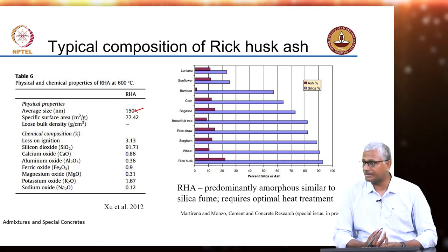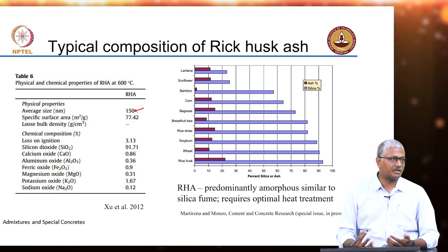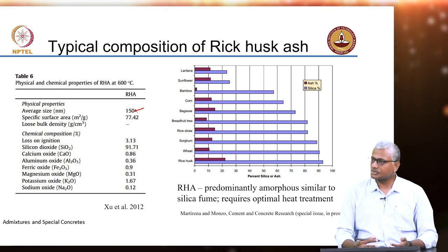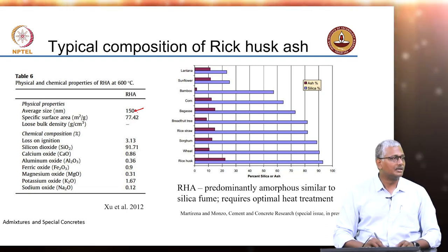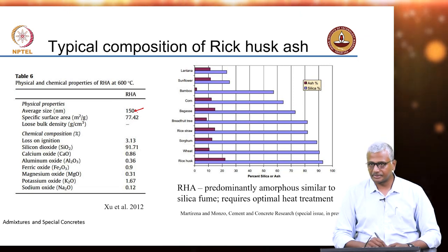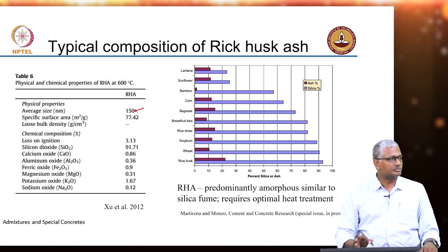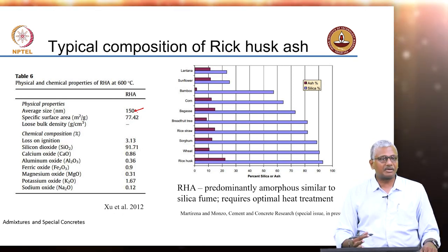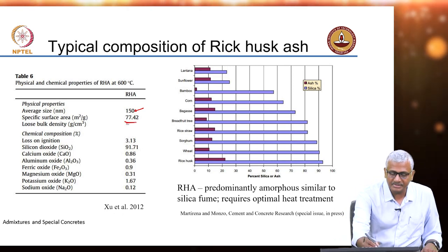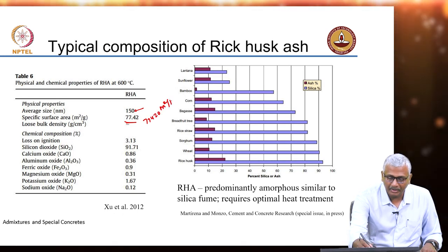This particular study had an RHA with 150 nanometre size. 150 nanometres is almost in a nanoparticle size range — from nanometres to tens of nanometres we typically call them nanoparticles — so 150 is not really a microparticle as we are used to for cement replacement. Many other research studies will have rice husk ash with particle sizes similar to that of cement particles, except that because of the highly cellular nature of these particles you get extremely large surfaces.